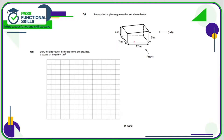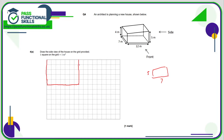So we need to draw the side view. This is the side here, so it's five by seven — a rectangle which is five meters by seven meters. Each square on the grid is one meter squared, so this is nice and easy. All we need to do is count five across and seven up. And there we have it — that is the side view.